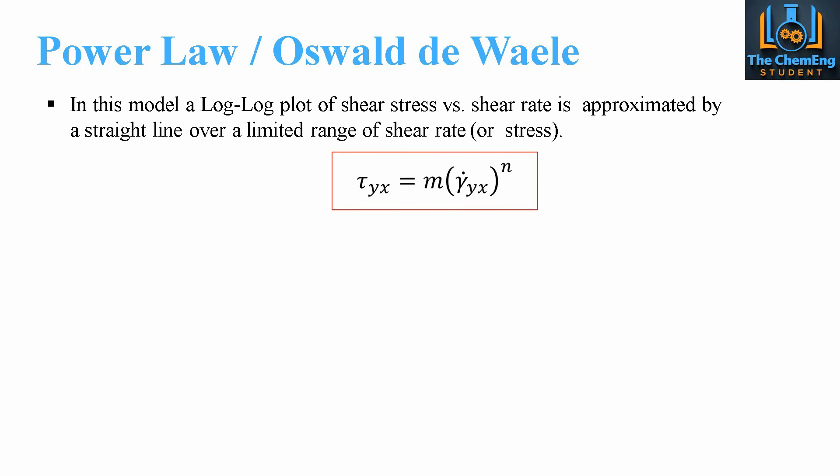The equation is that the shear stress tau_yx is equal to m multiplied by gamma_yx to the power n, where gamma is the shear rate. So we have the shear stress as a function of the shear rate.